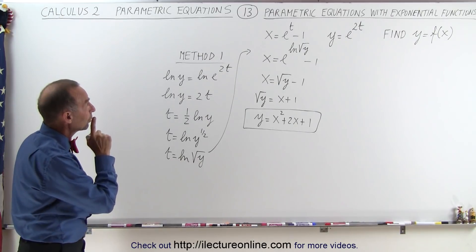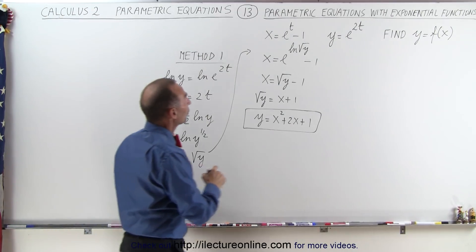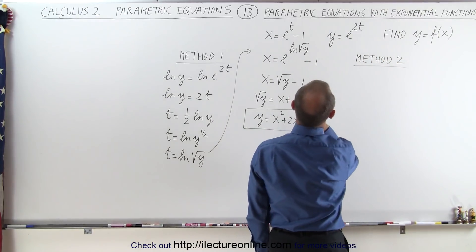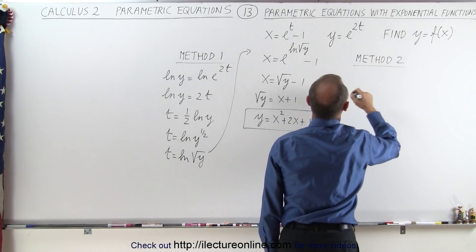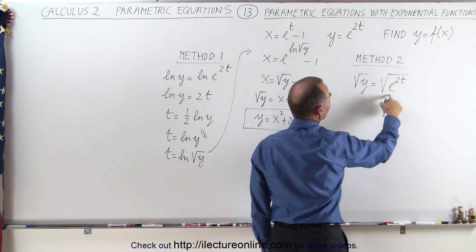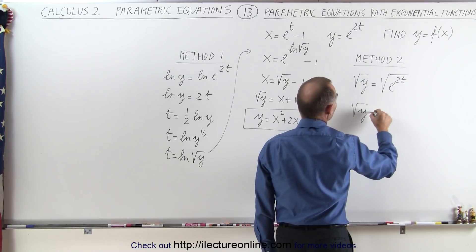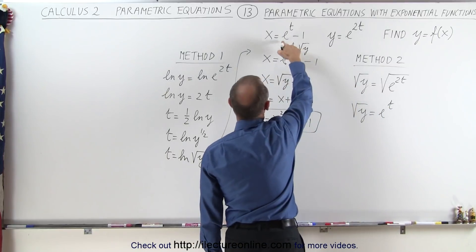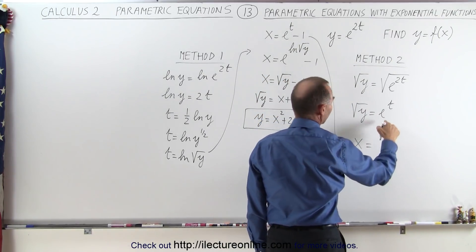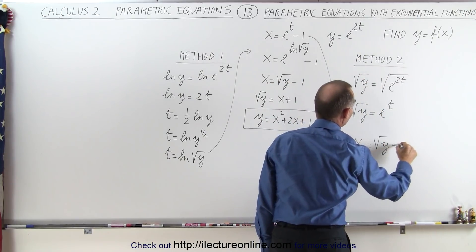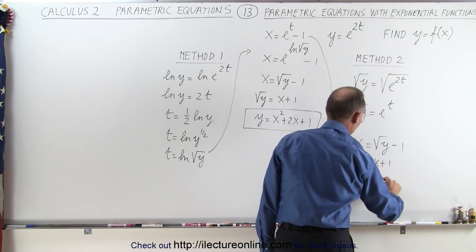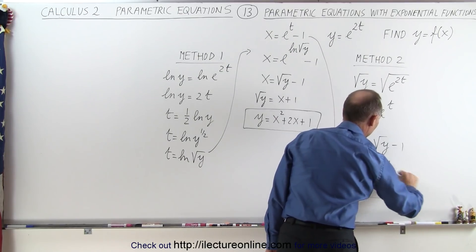Now we could do something slightly different — Method 2. What we're going to do here is take the square root of both sides of y equals e to the 2t. The square root of e to the 2t is simply e to the t, so the square root of y equals e to the t. We replace e to the t in the x equation, giving x equals the square root of y minus 1, so the square root of y equals x plus 1, or y equals x squared plus 2x plus 1. Either method gives us the correct equation.